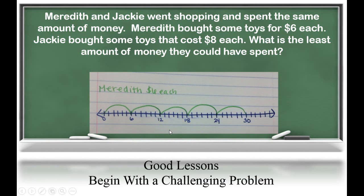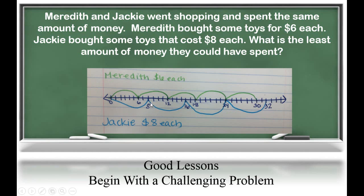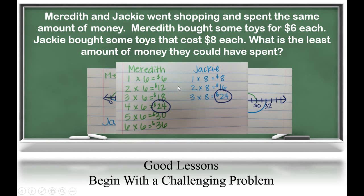One way students could solve this is by skip counting on a number line. Starting with Meredith: one toy is $6, two toys is $12, three toys is $18, four toys is $24, and five toys is $30. Then the student adds Jackie to the number line: one toy is $8, two toys is $16, and three toys is $24. Both Meredith and Jackie landed on $24, so $24 is a common multiple. Another way is to list out multiplication facts and circle the ones in common — Meredith bought four toys at $6 each for $24, and Jackie bought three toys at $8 each for $24.